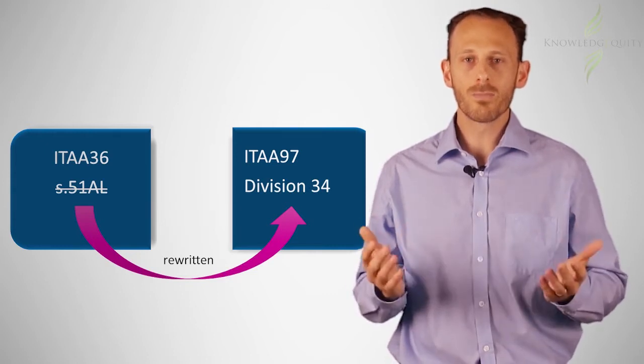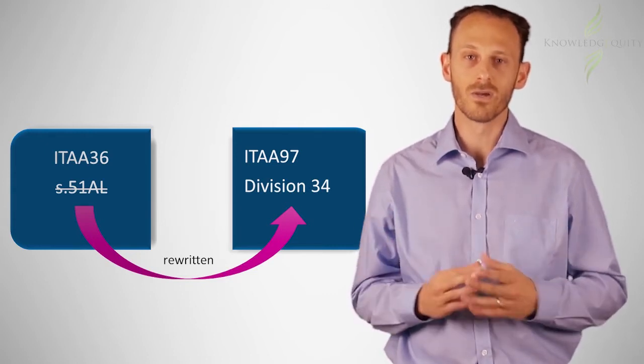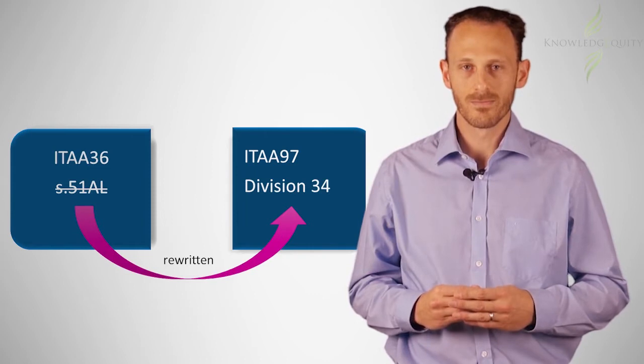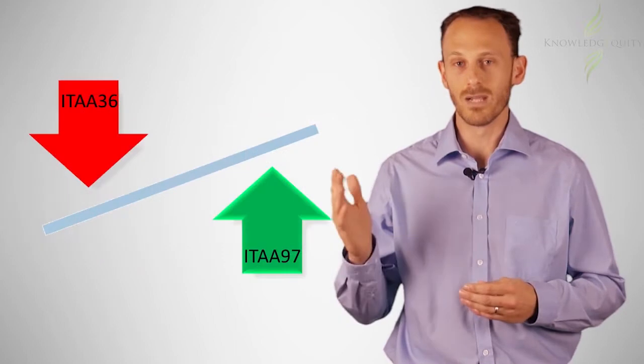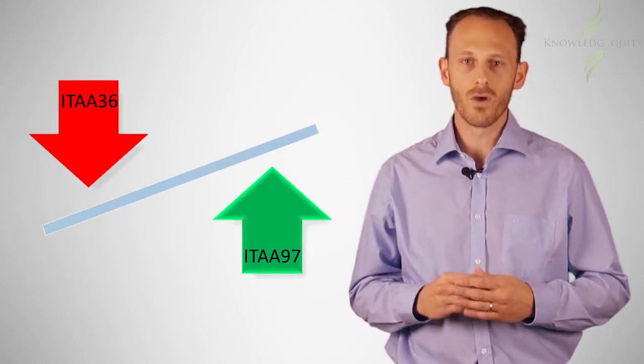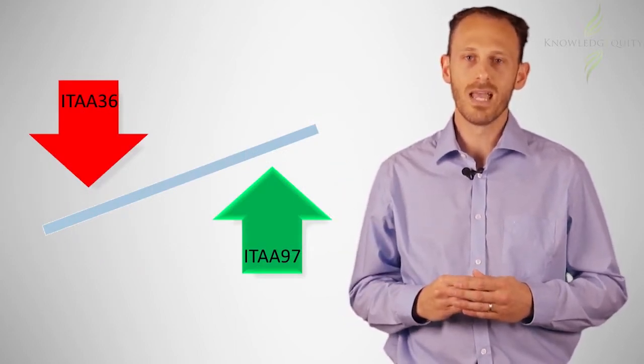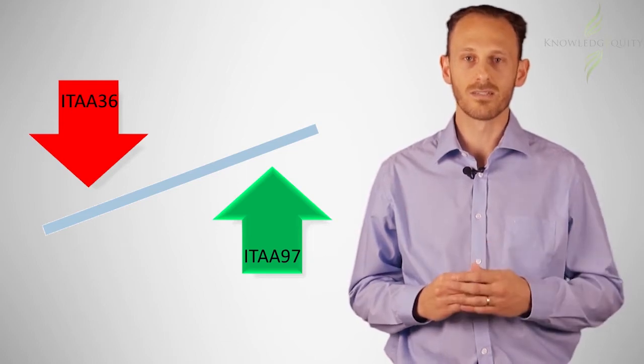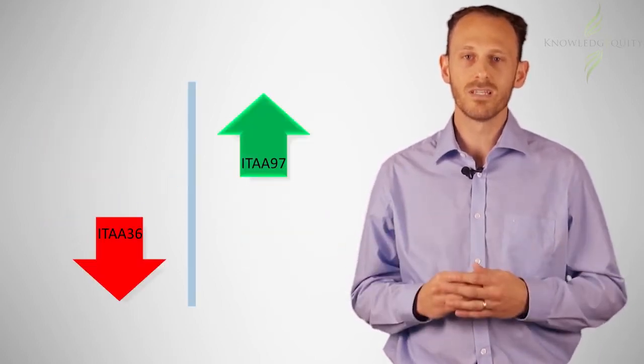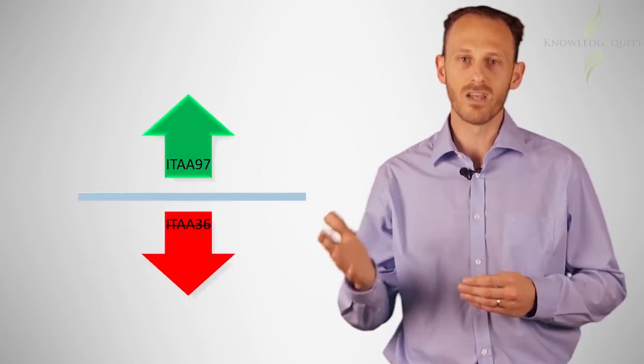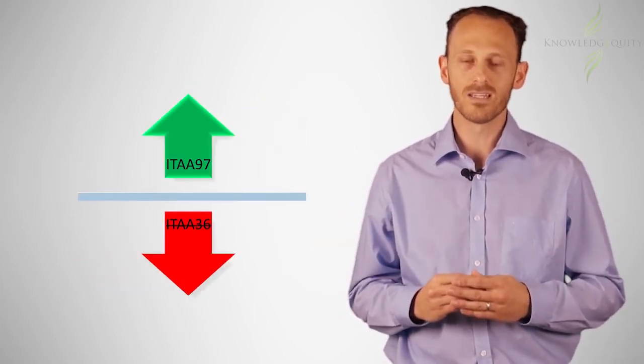However, although the process began over 15 years ago, it has yet to be finished. This means that the legislation that has been rewritten is in ITAA 97, and those parts that have yet to be rewritten are still in the ITAA 36. When the process of rewriting is eventually finished, there will only be the ITAA 97 for the law in effect at that time.